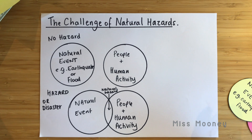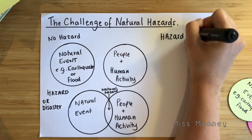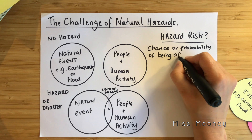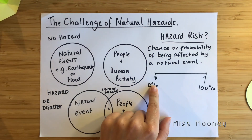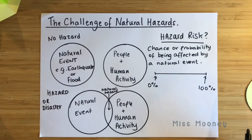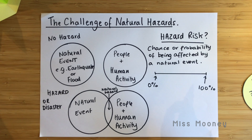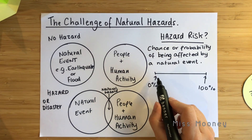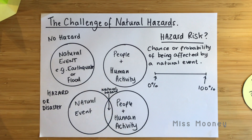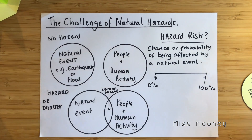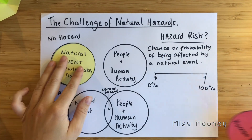Hazard risk, on the other hand, is the chance or probability of being affected by a natural event. If you are living by a river that floods every single year, it's probably nearest to a 100% chance of being affected. If you are living in the United Kingdom, the chance of being affected by an earthquake is very slim, whereas if you are living on a fault line, it might be much, much higher. That is the hazard risk — the chance or probability of that overlap occurring.